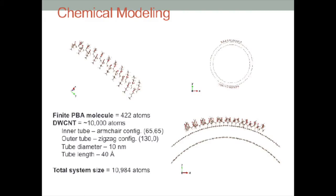Here are some images of the finite PBA molecule as well as the entire CNT polymer system. We wanted to model a system to our actual fabrication process. This is why we chose to make the tube diameter 10 nanometers and create a double-walled CNT. This caused our system size to be very large, over 10,000 atoms. The following slides are snapshots from our simulation.